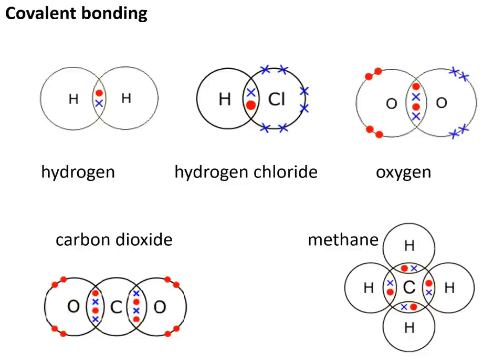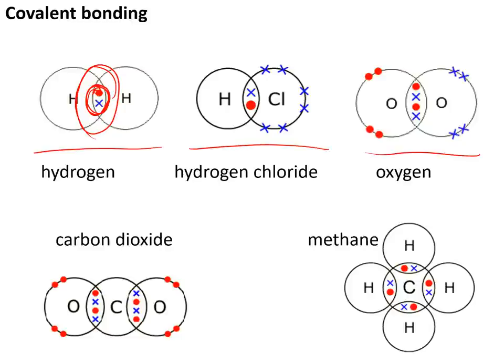Covalent bonding involves sharing electrons, as seen in this diagram of hydrogen — that shared pair of electrons in the middle is a covalent bond. You need to memorise these diagrams for hydrogen, hydrogen chloride, oxygen, carbon dioxide, and methane. If you cannot remember the diagram, at least draw a few overlapping circles with some pairs of electrons in the overlapping bits, as that's quite likely to get you a mark.